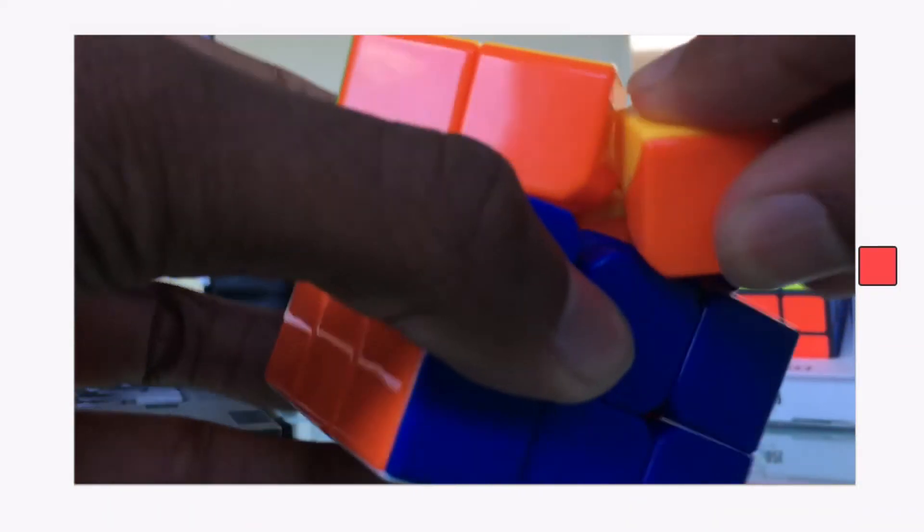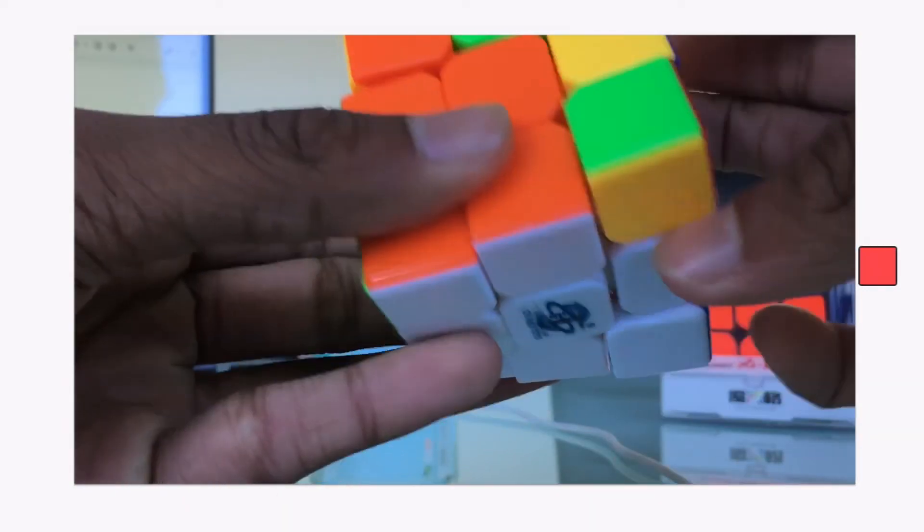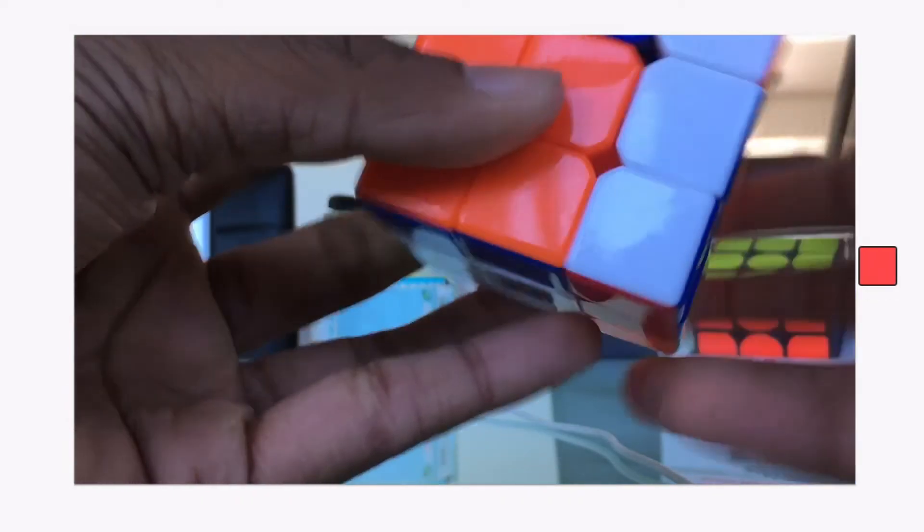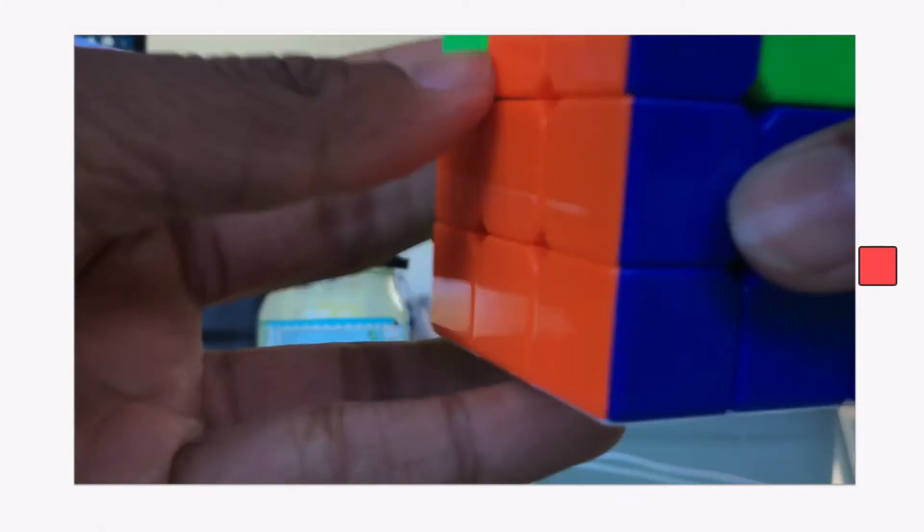And lastly, you cannot just have two pieces swapped, whether it is two edges, two corners, or either. There's just no possible PLL permutation. For example, three pieces would work for a T permutation. So let's do the math.